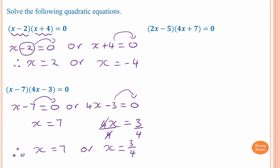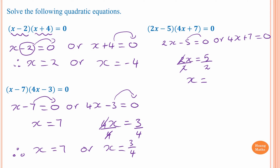Next one — you can pause the video and try it yourself. We have 2x minus five equals zero or 4x plus seven equals zero. Moving the five gives 2x equals five, then dividing by two gives x equals five over two, which is 2.5 or two and a half.